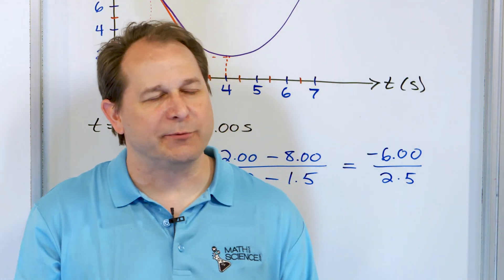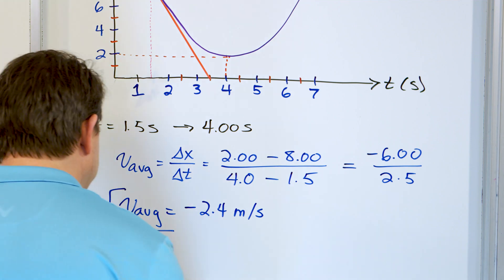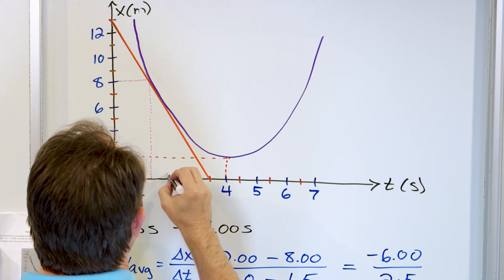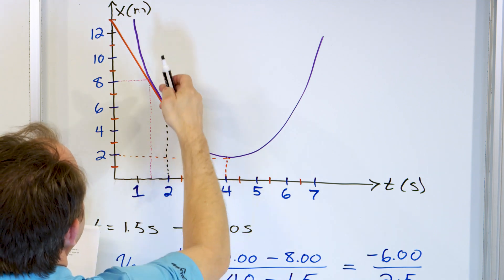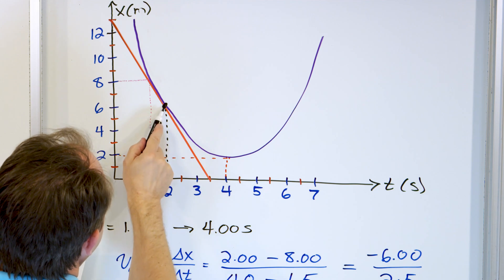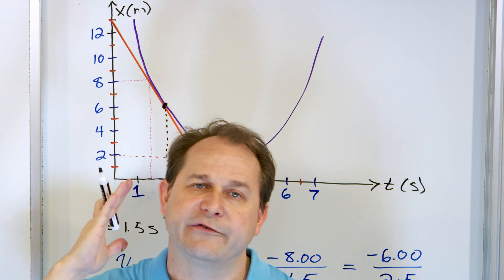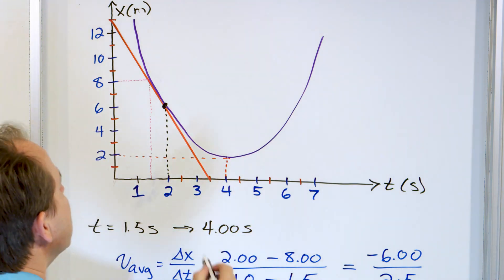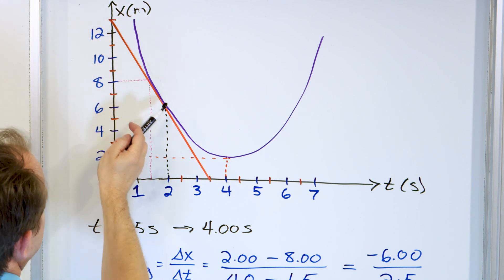For part B, we want to find the instantaneous velocity at t equals 2 seconds by using the slope of the tangent line, which is given. At exactly 2 seconds, this red line is attempting to be the tangent line to the graph at that point. Trust that this red line is tangent to the graph at t equals 2 seconds. The red line touches the y-axis here and the x-axis here, giving us two points on the line.